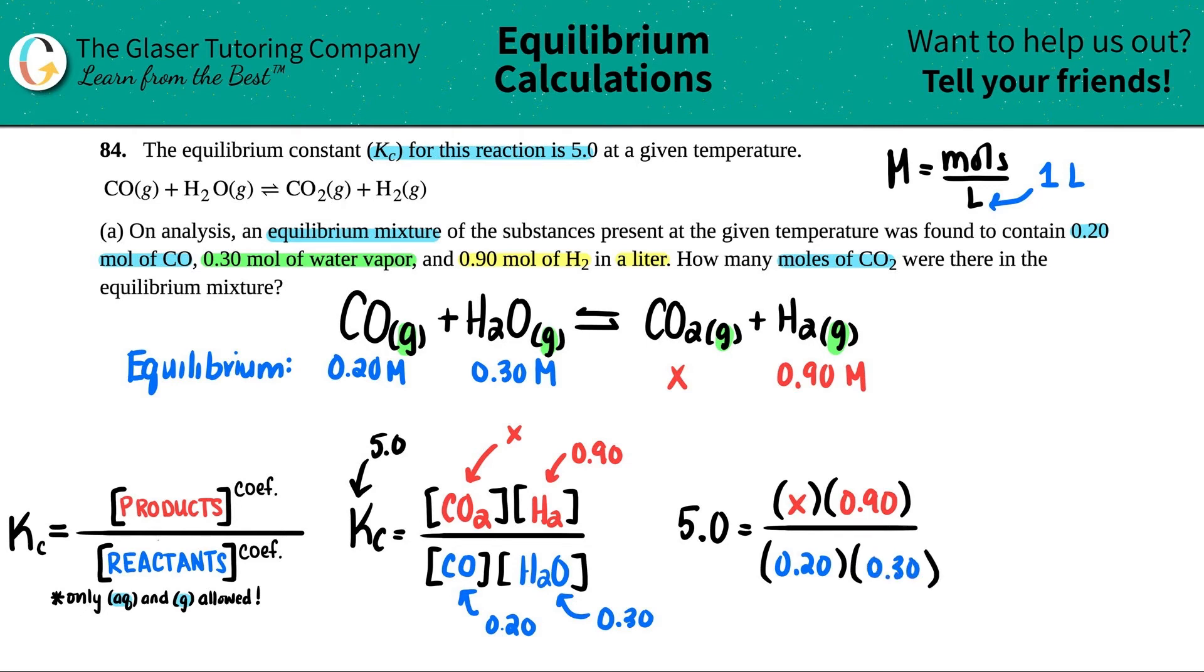Looks like a simple cross multiplication. I see all these numbers multiplied by each other and these guys as well. So let me calculate: 5 times 0.2 times 0.3 equals 0.3, which equals 0.90x. I want to get rid of the 0.90, so I'll divide each side by 0.90 and then we'll get the answer.